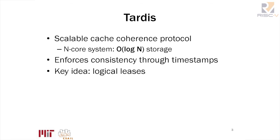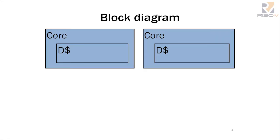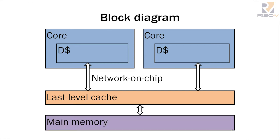In a logical leasing scheme, we can read from a cache line if we have a valid lease, and we can write to it as long as the lease has expired. In our typical system, we have some number of cores with private L1 data caches connected to a last-level cache through an on-chip network. The last-level cache also has our manager, which controls the coherence rules, and this is connected to main memory.